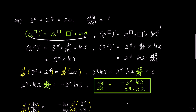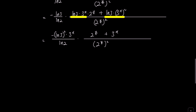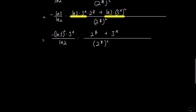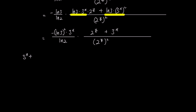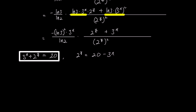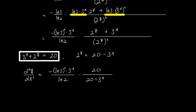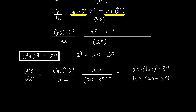The second derivative is a function of both x and y. If we need it in terms of x alone, we'll need to express y as a function of x. Given the original problem 3 to the power of x plus 2 to the power of y equals 20, we can express 2 to the power of y as 20 minus 3 to the power of x. Substituting into our second derivative and simplifying, we get negative 20 ln 3 squared times 3 to the power of x over ln 2 times 20 minus 3 to the power of x, all squared.